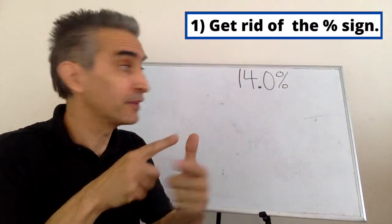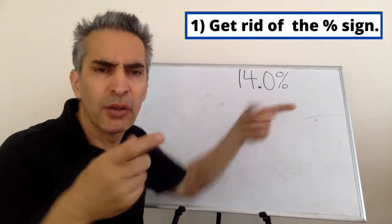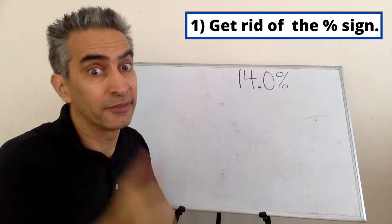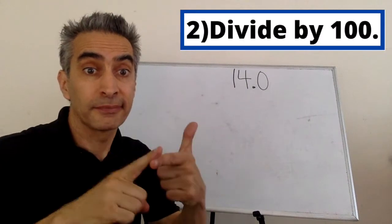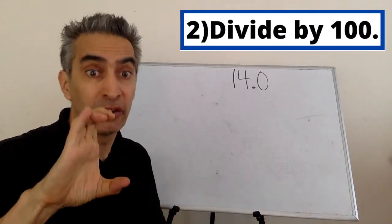There's two steps. First, we got to get rid of this percent sign. Second, we're going to divide by 100.